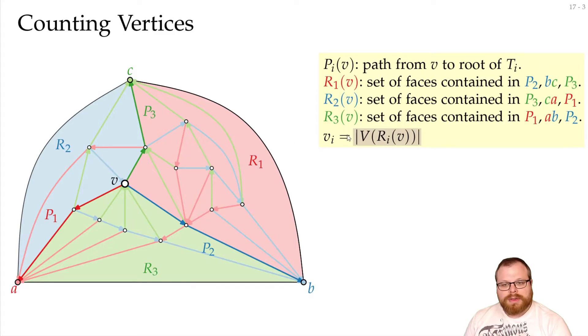That means that in region 1 we have the interior vertices plus the vertices here. So we have all the vertices inside this region except this. So for v_i, we have number of vertices in R_1 minus number of vertices on path P_3. Here we have all the vertices minus P_1, and here we have all the vertices minus P_2.